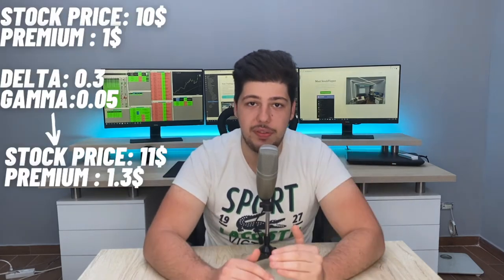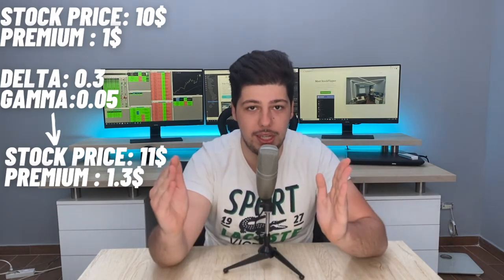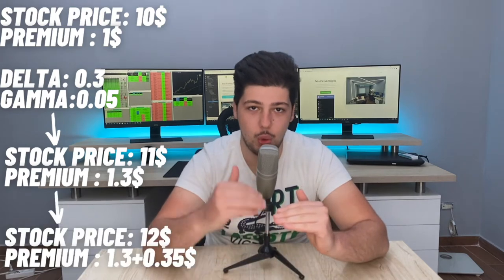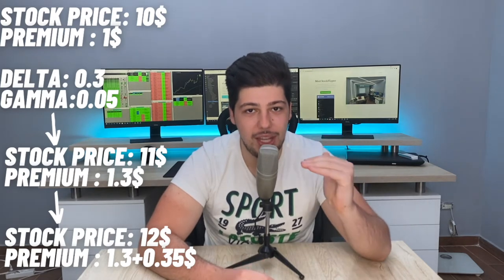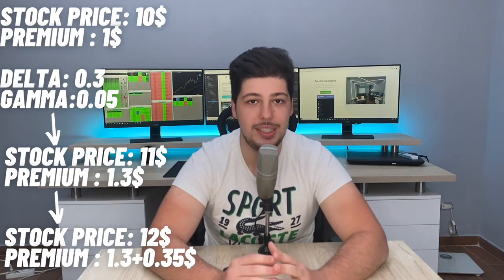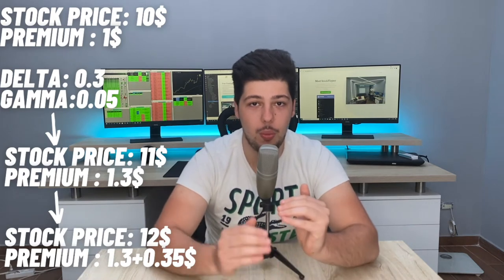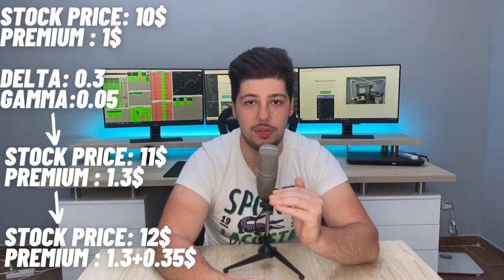Gamma measures how much delta will change if the stock moves by $1. If the stock is $10, delta is 0.3, and gamma is 0.05 — if the stock went from $10 to $11, the premium goes from $1 to $1.30. But on the next move from $11 to $12, the value of delta changes. The new delta is the old delta plus gamma: 0.3 plus 0.05 equals 0.35. So the premium goes from $1.30 to $1.65 because we used the new delta of 0.35.